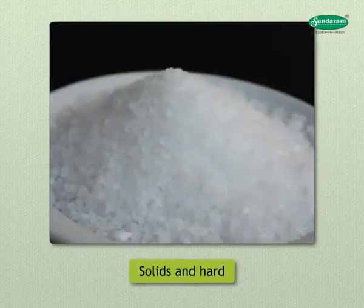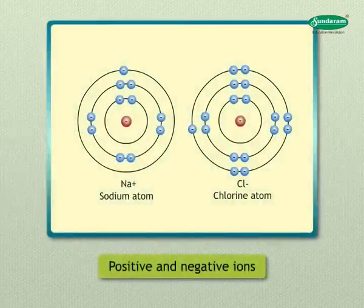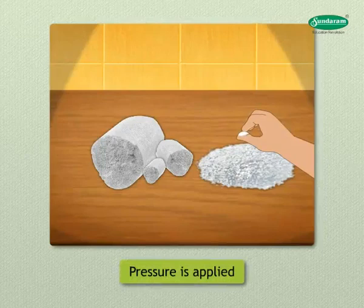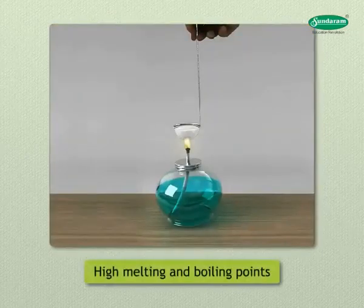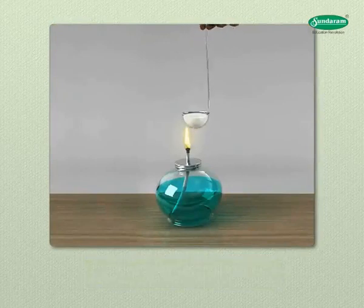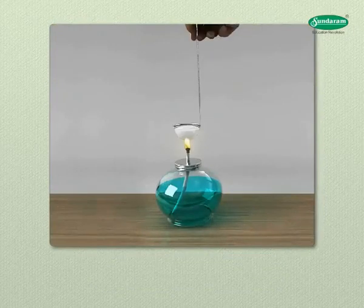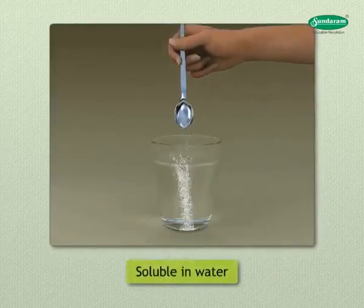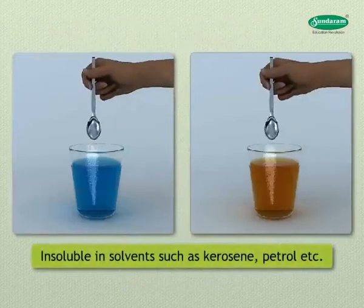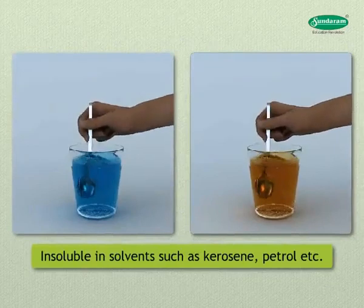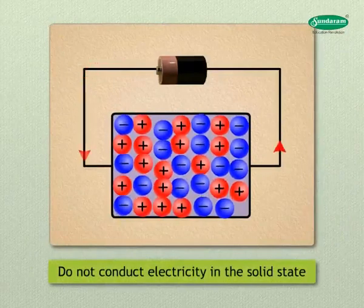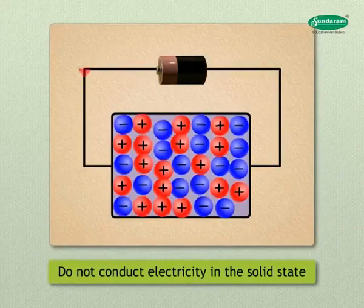General properties of ionic compounds: they are solid and hard due to strong forces of attraction between positive and negative ions. They are generally brittle and break into pieces when pressure is applied. Ionic compounds have high melting and boiling points as considerable energy is required to break the strong intermolecular attractions. They are generally soluble in water and insoluble in solvents such as kerosene and petrol.